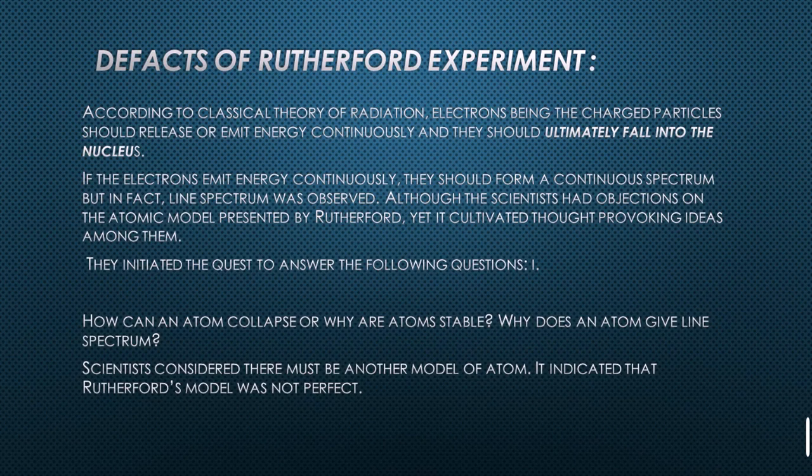According to the classical theory, there should be no stable atoms. Furthermore, if electrons emit energy in a continuous manner, they should form a continuous spectrum. However, the actual spectrum produced by atoms was a line spectrum, not a continuous spectrum.